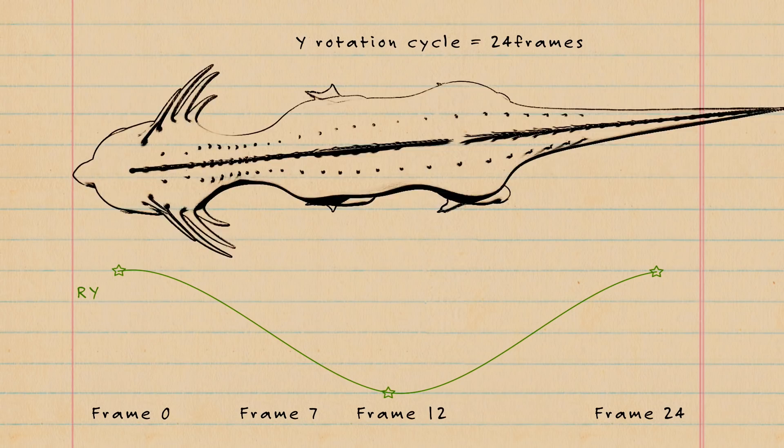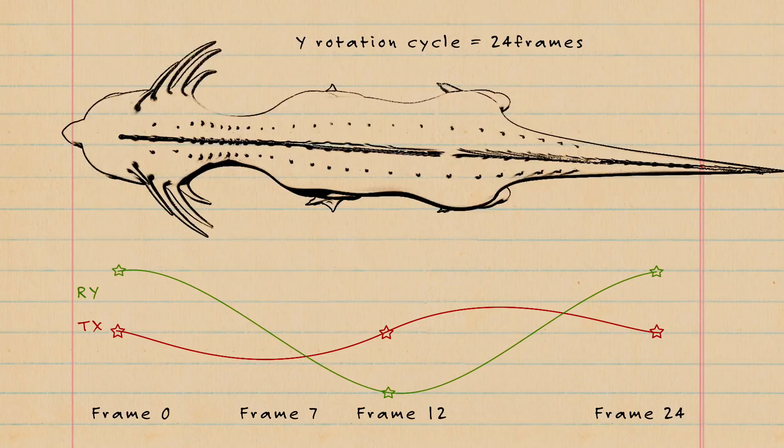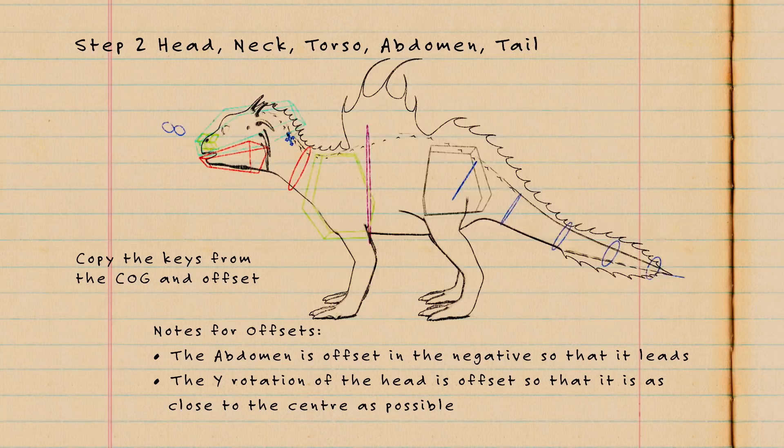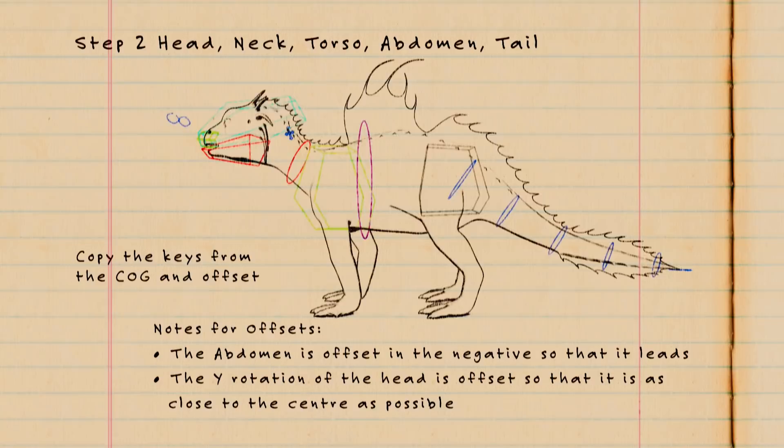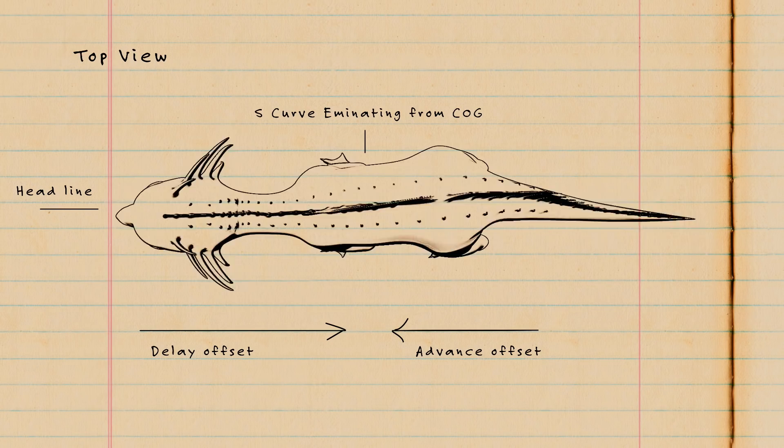Now we copy this motion to the head, the neck, the torso, abdomen, and tail, and we offset the keyframes for each. Everything forward of the COG will be delayed so that the head will roughly align itself along the center line. In Maya, this is the X coordinate. The abdomen will be offset ahead of the COG as the back feet lead in a quadruped.